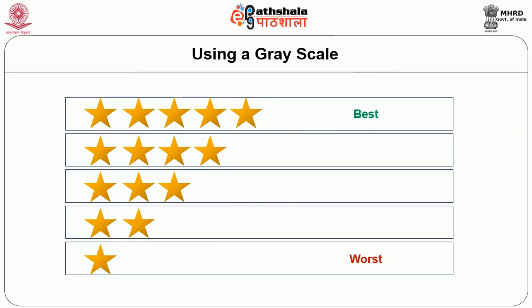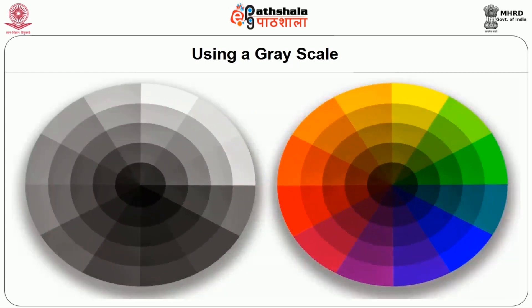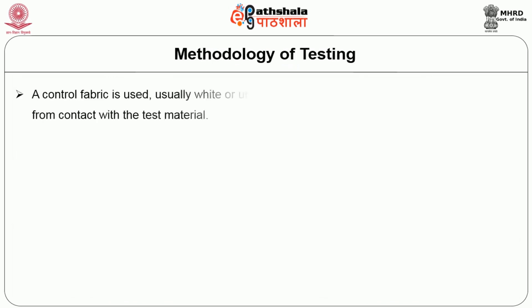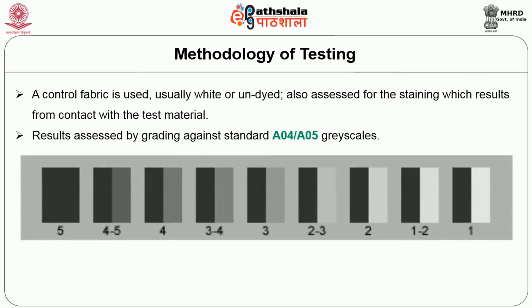After finishing the Laundro meter process, take the sample, dry it, and compare with the grayscale. Half ratings such as 3-4 or 4-5 can also be given. Grade 5 means no change in color or staining; grade 1 means drastic color difference. A white undyed control fabric is used and assessed for staining resulting from contact with the test specimen. Result is graded against ISO 4 and ISO 5 standards.